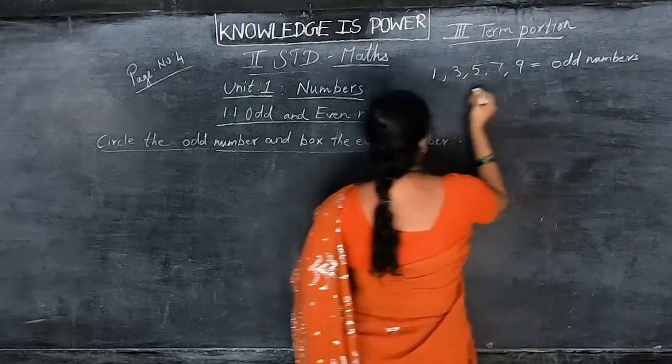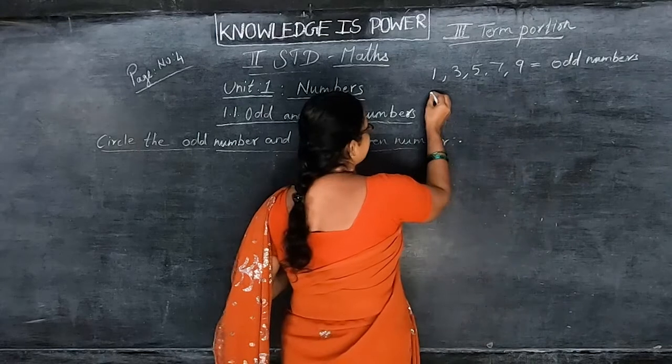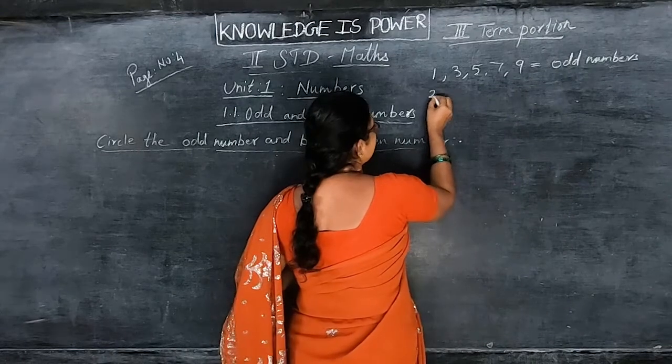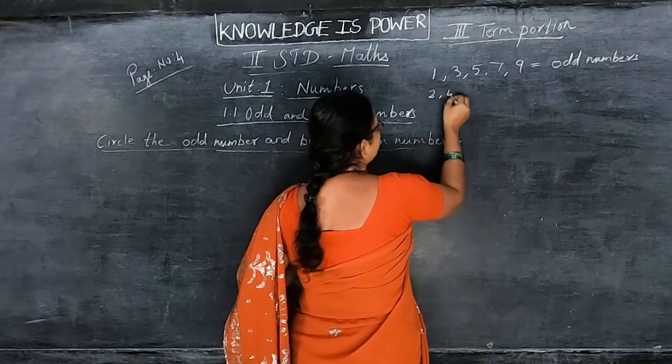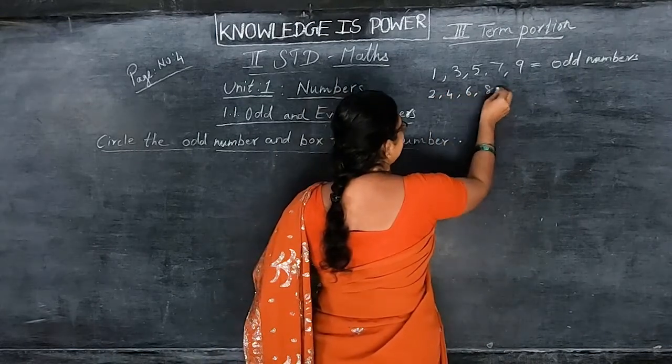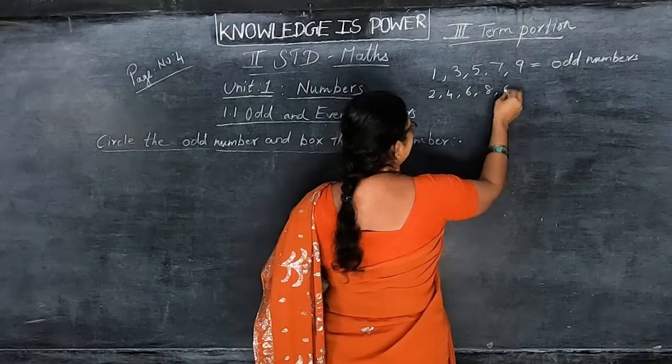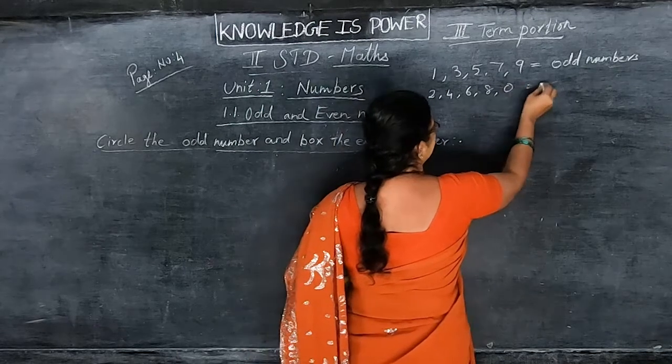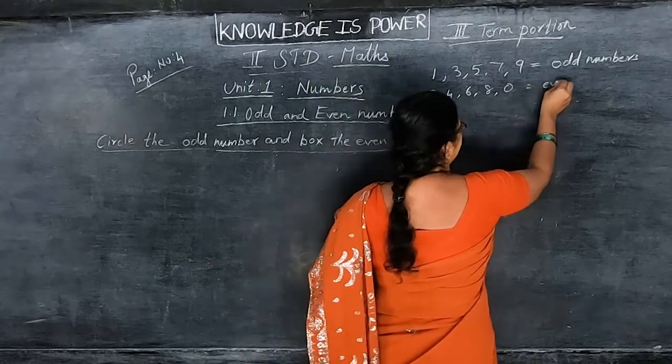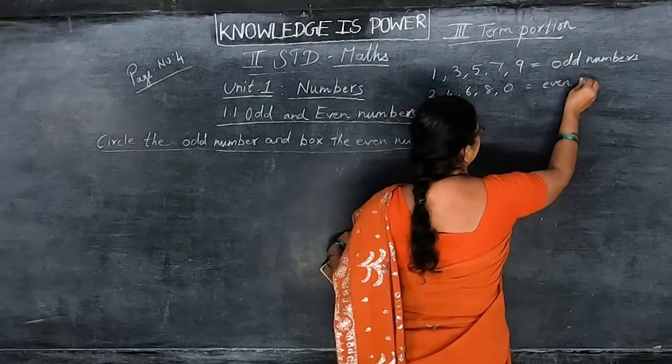So even numbers means what, children? 2, 4, 6, 8, and 0 — these are even numbers. If any of these digits appears in the 1's place, the number is even.